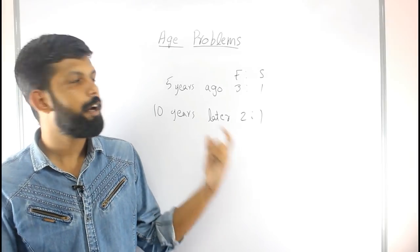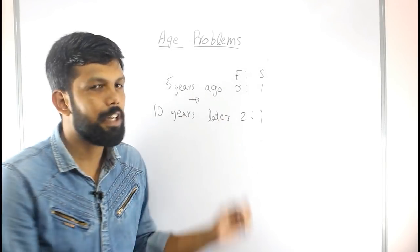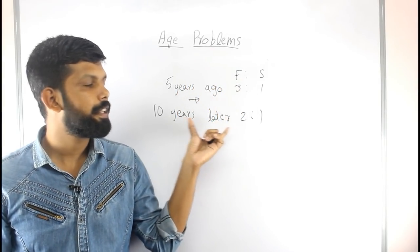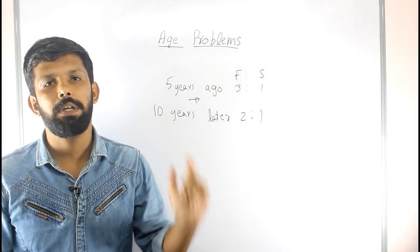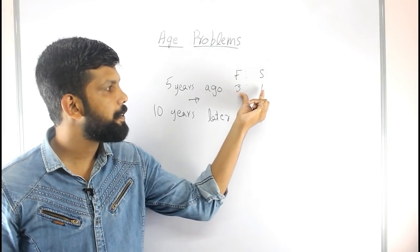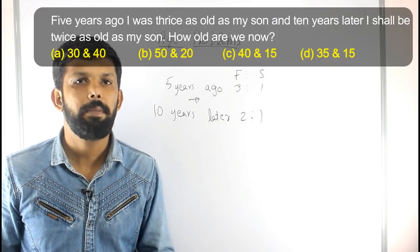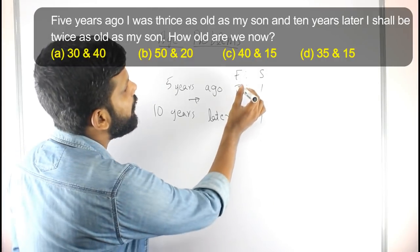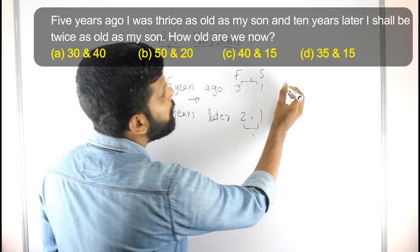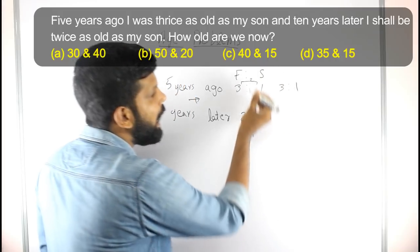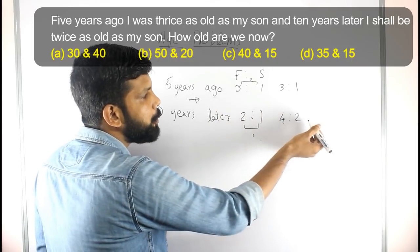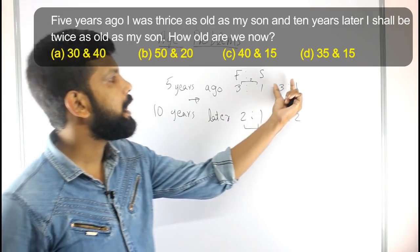Here is the present age. The difference between the two time points is 10 years. We have the ratio 2 is to 1 for 5 years ago. We need to make the difference in units the same across both ratios. Multiplying to align: we get 4 is to 2, then the ratio becomes the same difference.